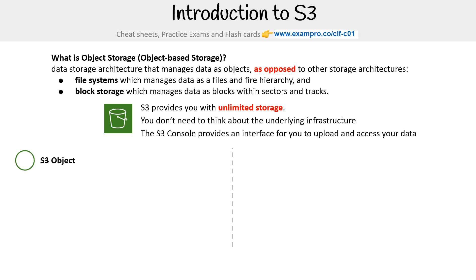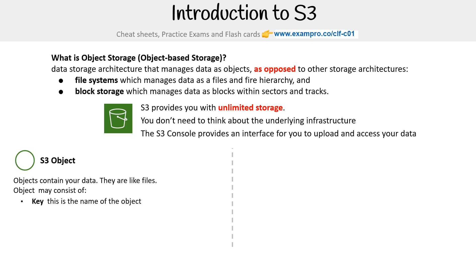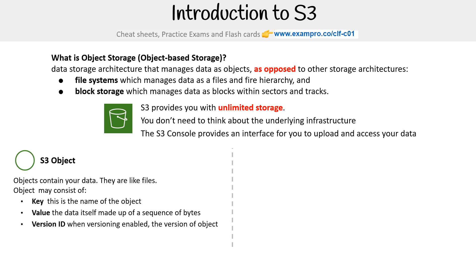We have the concept of S3 objects. Objects contain your data — they are like files. But objects may consist of: a key (the name of the object), a value (the data itself, made up of a sequence of bytes), a version ID (when versioning is enabled, the version of the object), and metadata (additional information attached to the object).